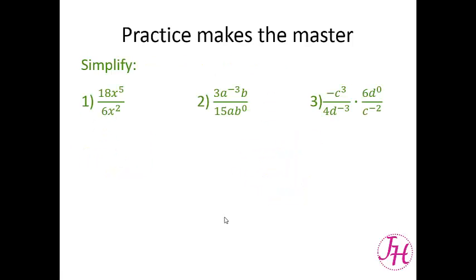Now you have some problems to practice. Simplify 18x to the fifth over 6x squared; 3a to the negative 3 b over 15ab to the 0; and negative c cubed over 4d to the negative 3, times 6d to the 0 over c to the negative 2.